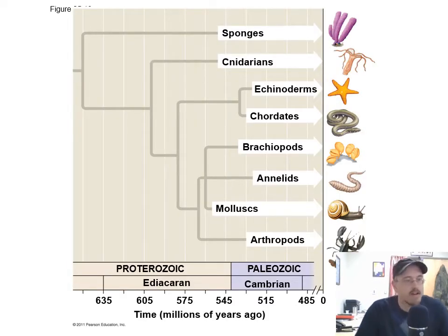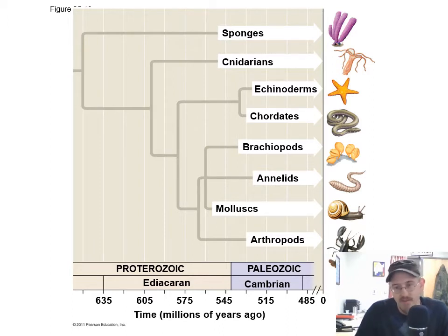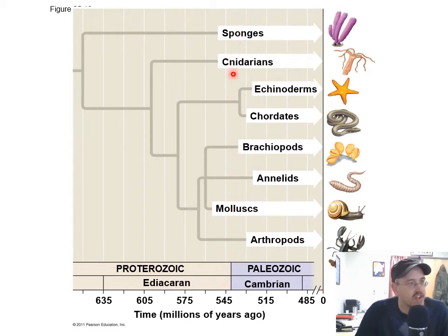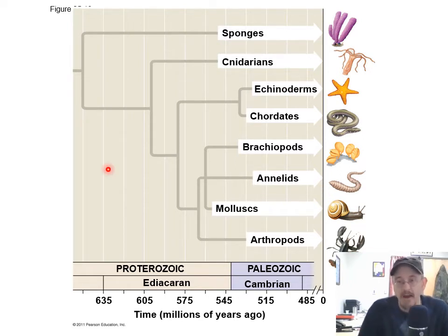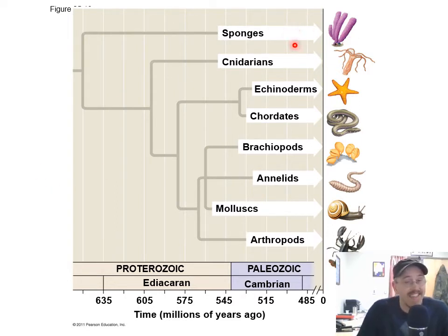Here's the cladogram showing the invertebrates, and the vertebrates — the chordates, of course. Most of the animals on this planet are invertebrates. Right here at the Cambrian Explosion, before the Cambrian, a few of these were around, like sponges and cnidarians and maybe some mollusks. But right during the Cambrian, and before the Cambrian's over, all known animal phyla existed by the end of the Cambrian. All of them — including some that are now extinct. But all of the ones that are alive now were here by the Cambrian.